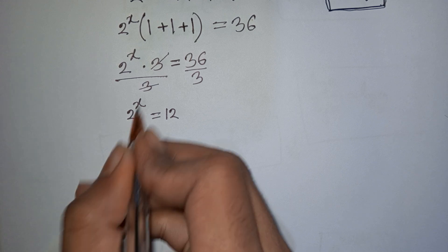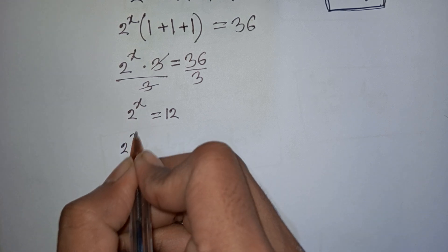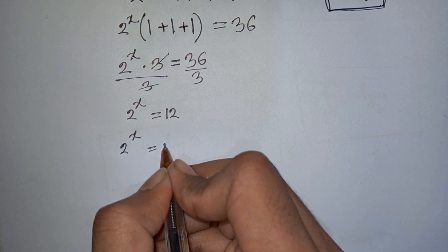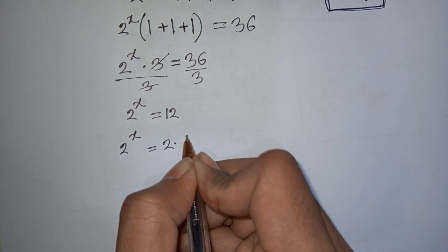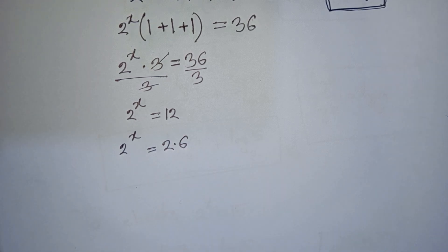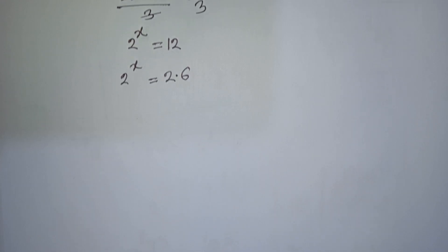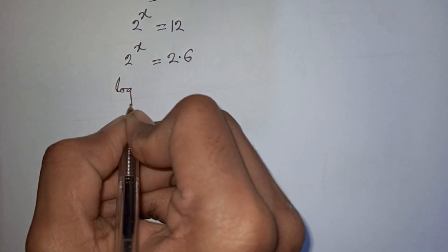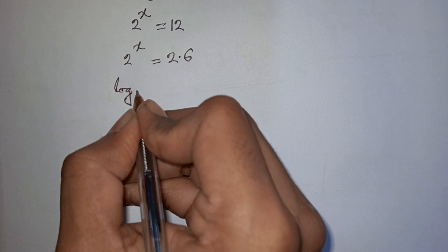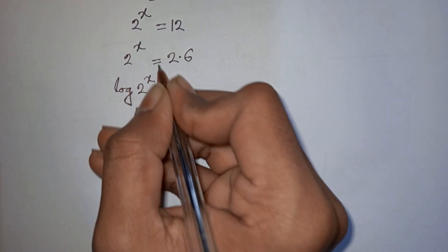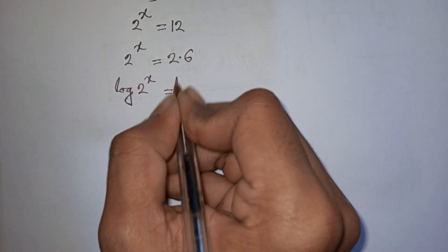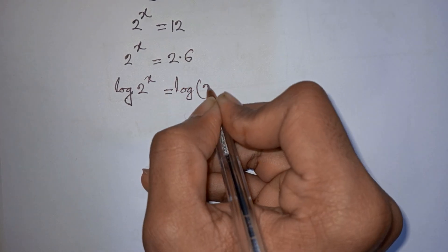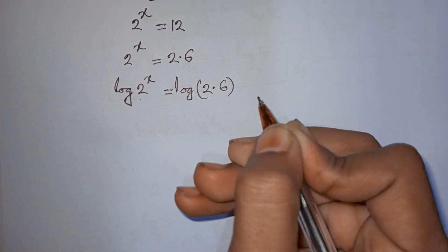Now we have 2 power x is equal to 12, which can be written as 2 multiplied by 6. Taking log from both sides: log of 2 power x is equal to log of 2 times 6.